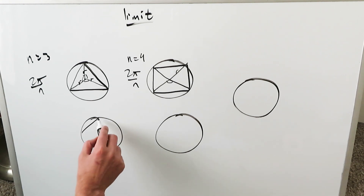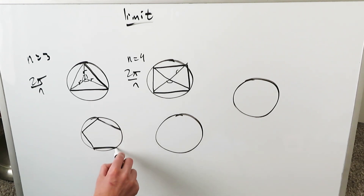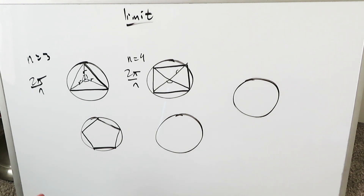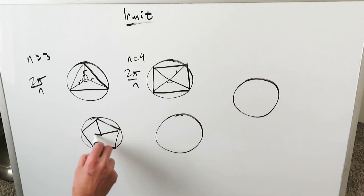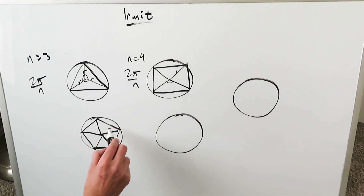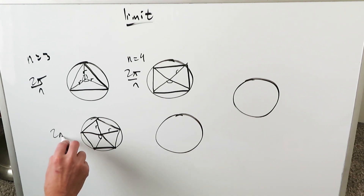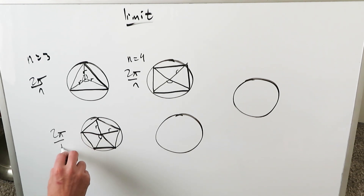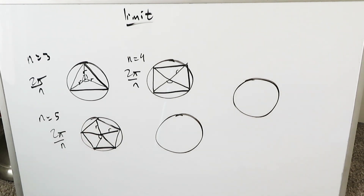Let's draw a regular pentagon — 5 equal sides, always n equal sides — and we're going to split this into congruent triangles, and there can be five of those. Again you have the radii generated and again you have a central angle of 2π over n. Here n is equal to 5, so it would be 2π over 5.